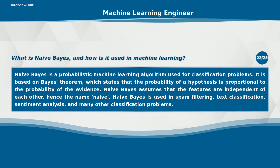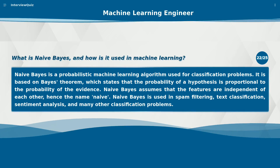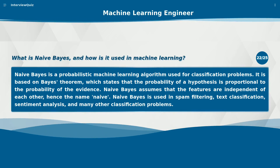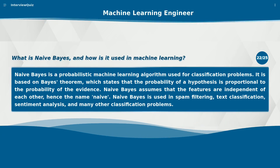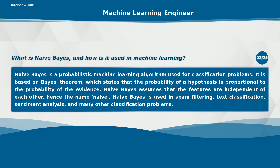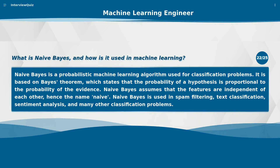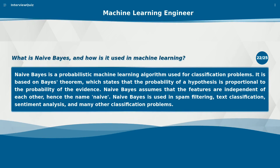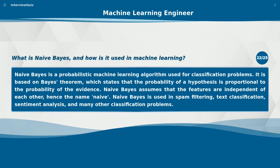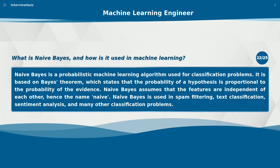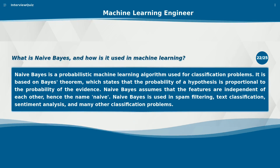What is Naive Bayes and how is it used in machine learning? Naive Bayes is a probabilistic machine learning algorithm used for classification problems. It is based on Bayes' theorem, which states that the probability of a hypothesis is proportional to the probability of the evidence. Naive Bayes assumes that the features are independent of each other, hence the name. It is used in spam filtering, text classification, sentiment analysis, and many other classification problems.